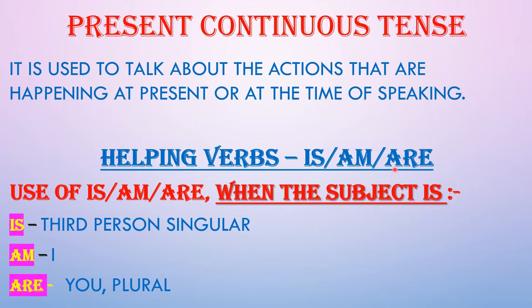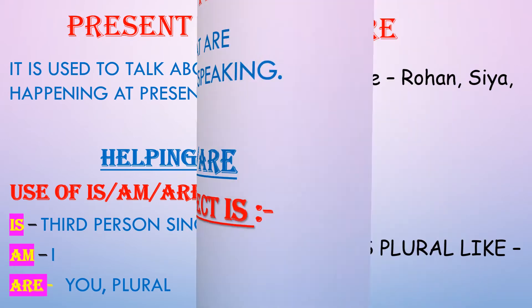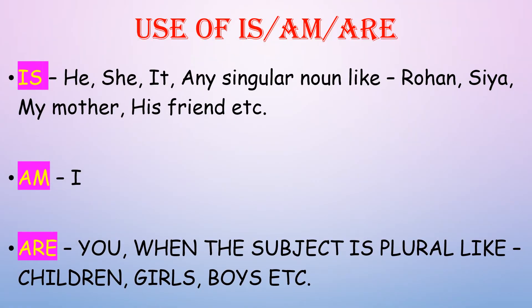How should we use these helping verbs? "Is" is always used when the subject is third person singular. "Am" is always used with the subject "I". And "are" is used when the subject is "you" or when the subject is plural. Let us see one more time the use of is, am and are.